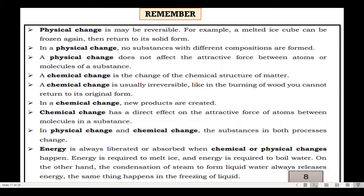In a chemical change, there is a change in the chemical structure of matter, involving chemical bonding, and there are five evidences of chemical change. It is usually irreversible — like burning wood, it cannot return to wood because it becomes ash. New products are created, and chemical change has a direct effect on the attractive force of atoms between molecules in a substance. In both physical and chemical change, the substances in both processes change — but one is physical and the other is chemical.